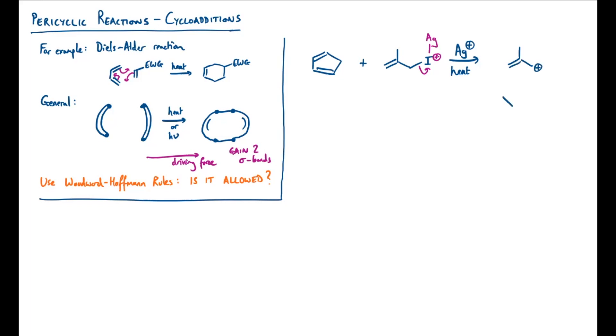The allyl cation will do a cycloaddition with the cyclopentadiene, which can be described like this, to form a product. I'll just try and draw it a little bit in 3D. This carbocation that forms can then just lose a proton to form probably the more stable alkene.